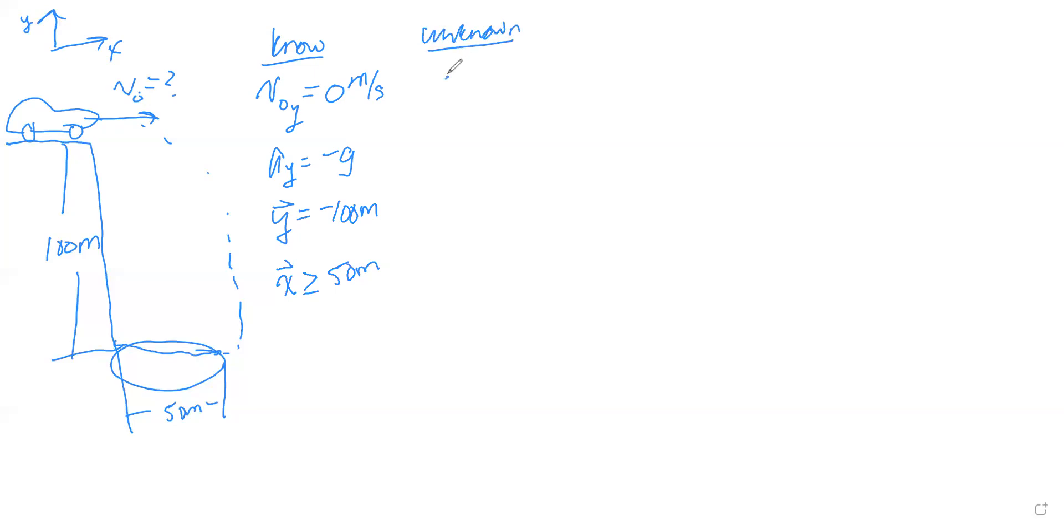What we're looking for is v initial, which is v initial x, since the entire velocity is directed in horizontal direction because it's driving off this cliff. What links the motion in the x and the y together? Well it's the fact that this car will continue traveling in the horizontal direction with this initial velocity as long as it's in the air for.